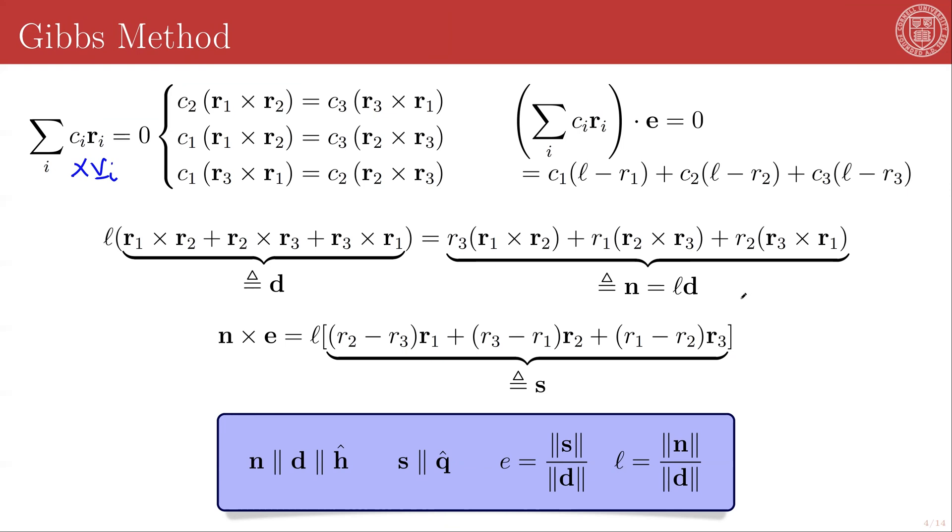It also works particularly well for large angular separations, so this is the exact opposite of Gauss's method. It works very poorly when the angular separations between the three vectors are very small, because then numerical noise takes over.